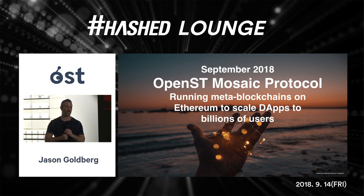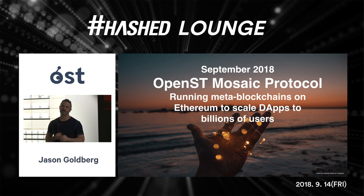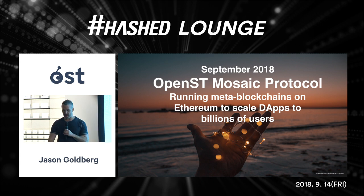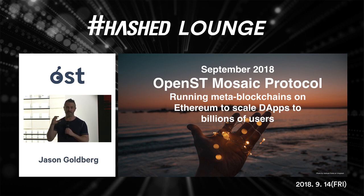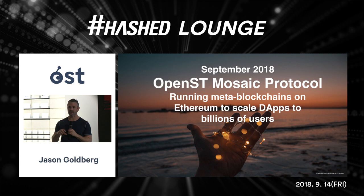What we're introducing today is the OpenST Mosaic protocol, which is the next step. When you have all these apps running transactions on auxiliary chains, how do you ensure they can finalize those transactions back on public Ethereum, and do so asynchronously so you can scale to tens of thousands of transactions per second for billions of users in an efficient manner?